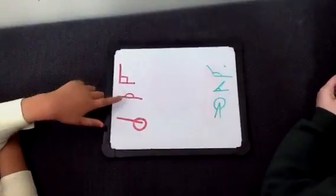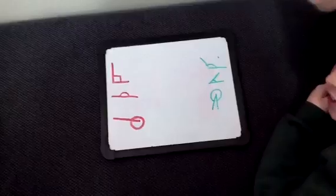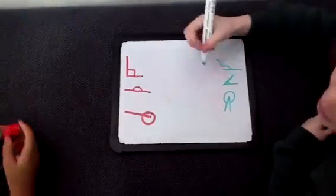Here we have a right angle, a straight angle, and a revolution angle. Now we're going to draw this angle here, the obtuse angle.